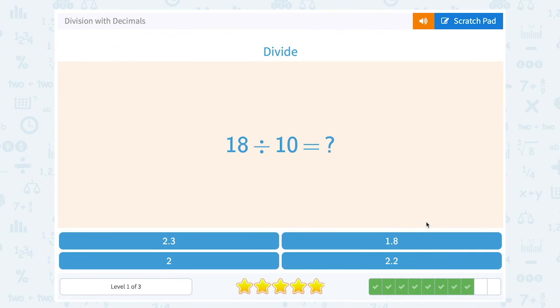18 divided by 10. Move your decimal point one place to the left, or make it one place value smaller. That's going to give us 1.8.